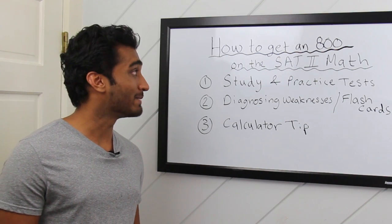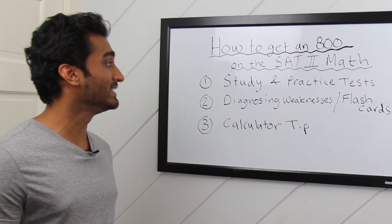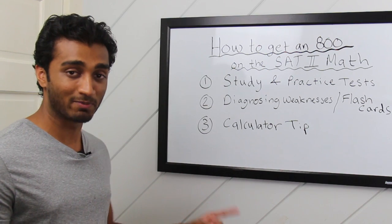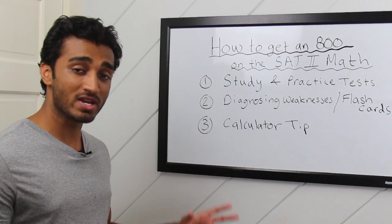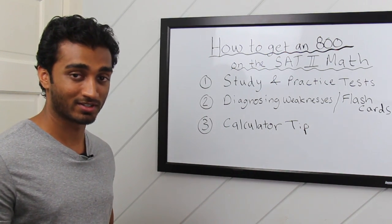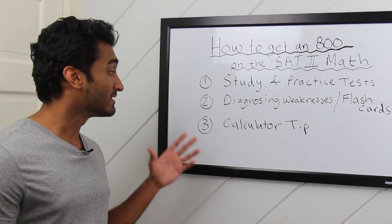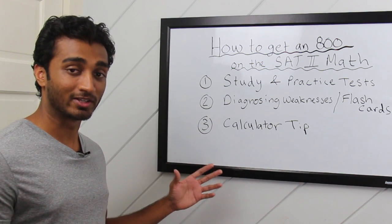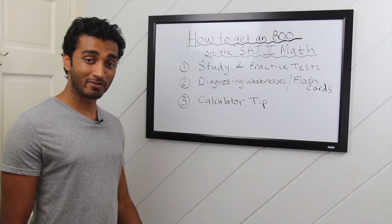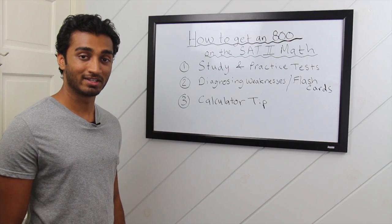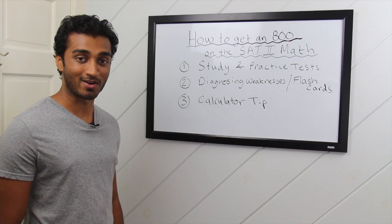And there you guys have it, the three tips on how to get an 800 on the SAT-2 math. Study and take practice tests. Diagnose your weaknesses and write them down on flashcards. And lastly, get programs into your calculator before test day. For more information on how to get an 800 on the SAT-2 math, go to preppedandpolished.com.